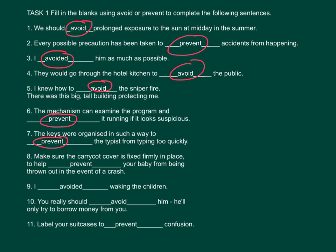Number 8: Make sure the carry cot cover is fixed firmly in place to help prevent your baby from being thrown out in the event of a crash — 確認嬰兒床保護蓋已經蓋穩，以預防撞擊時嬰兒被拋出。 Number 9: I avoided waking the children — 避免吵醒小朋友。 Number 10: You really should avoid him — he will only try to borrow money from you. Number 11: Label your suitcases to prevent confusion.